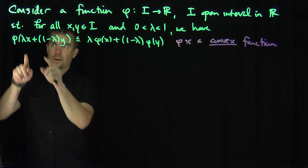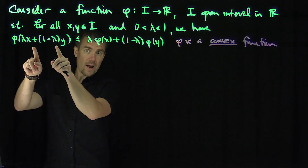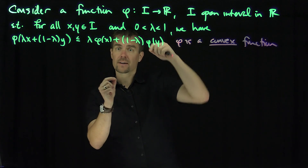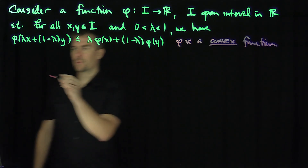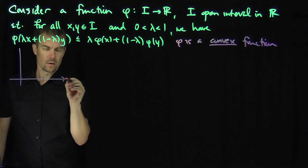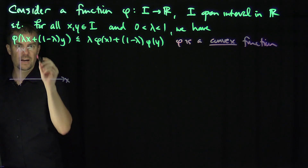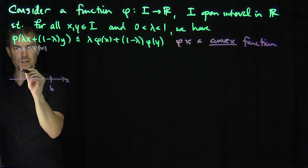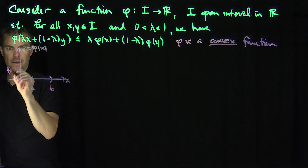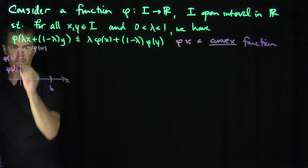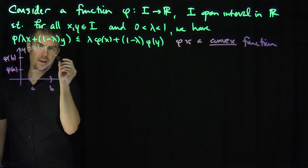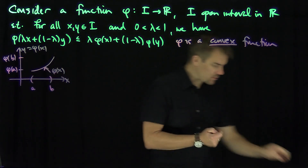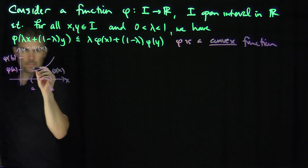Geometrically, this inequality means that when phi inputs a line segment between x and y, it outputs something that's majorized by a line segment between phi of x and phi of y. So geometrically, here's the x-axis, here's the y equals phi of x axis, and here's an interval i from a to b. If this is phi of a and this is phi of b, then the graph has to look something like this — that's the graph of phi of x.